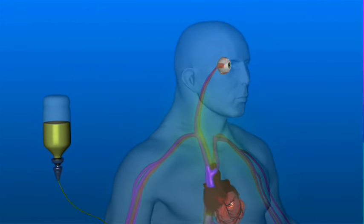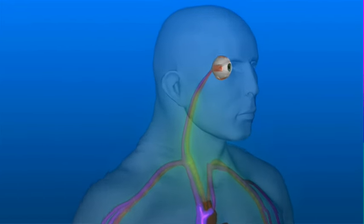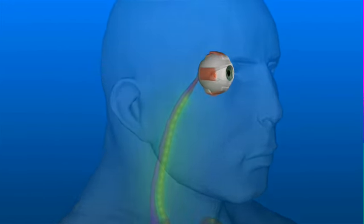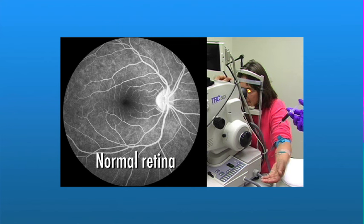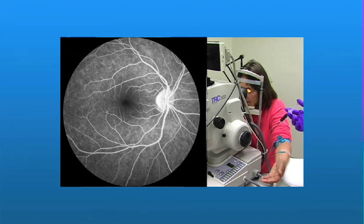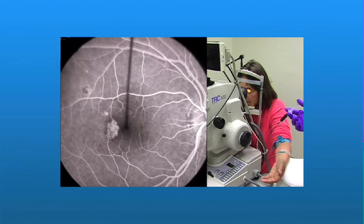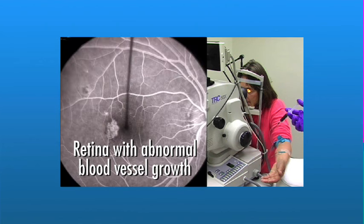Fluorescein dye is injected into a vein in your arm, and the dye travels to the blood vessels in the eye. A special camera is used to photograph the retina and blood vessels, which are illuminated with dye. These images provide a map of problem areas and help your doctor identify appropriate treatment options and monitor their effectiveness.